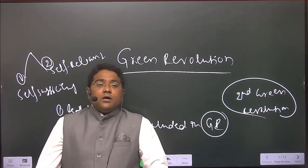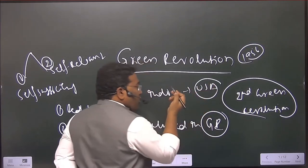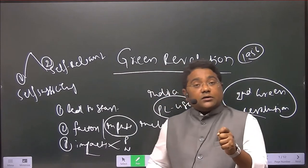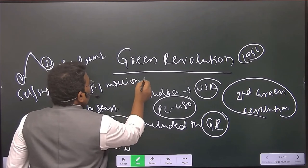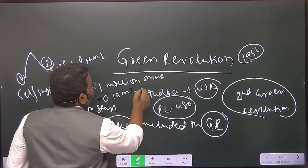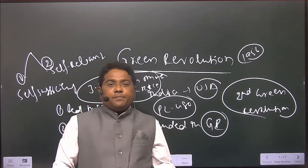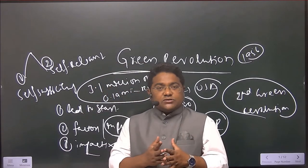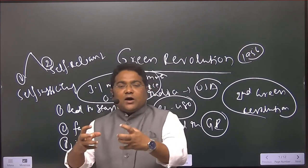In 1956, India approached the USA and we had the PL-480 agreement. Under that agreement, we brought 3.1 million tons of wheat and 0.19 million tons of rice. These two crops are water-guzzling crops — water intensive crops — meaning they suck more water from the soil.